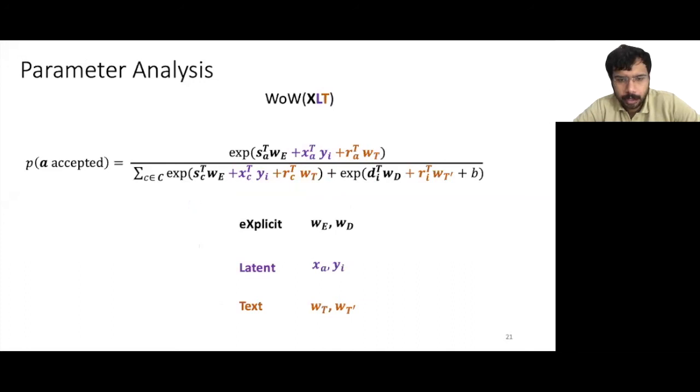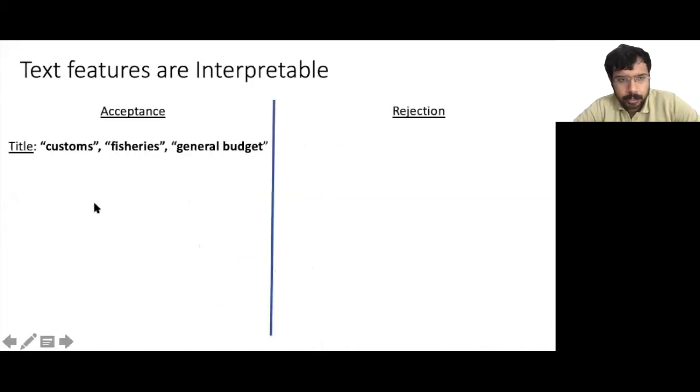Finally, we can try to interpret the text features. For this, we take the text parameter vectors wt and wt' and take the dot product with the word and bigram embeddings to get an importance score for each word and bigram. For the words in the dossier title, it seems that the words customs, fisheries, and the bigram general budget are predictive of acceptance, while the words market, framework, and greenhouse gas are predictive of rejection of the edit. This could be because of the relative ease or difficulty of editing laws related to these topics and correlate well with the dossier difficulty parameters that are learned by the model.